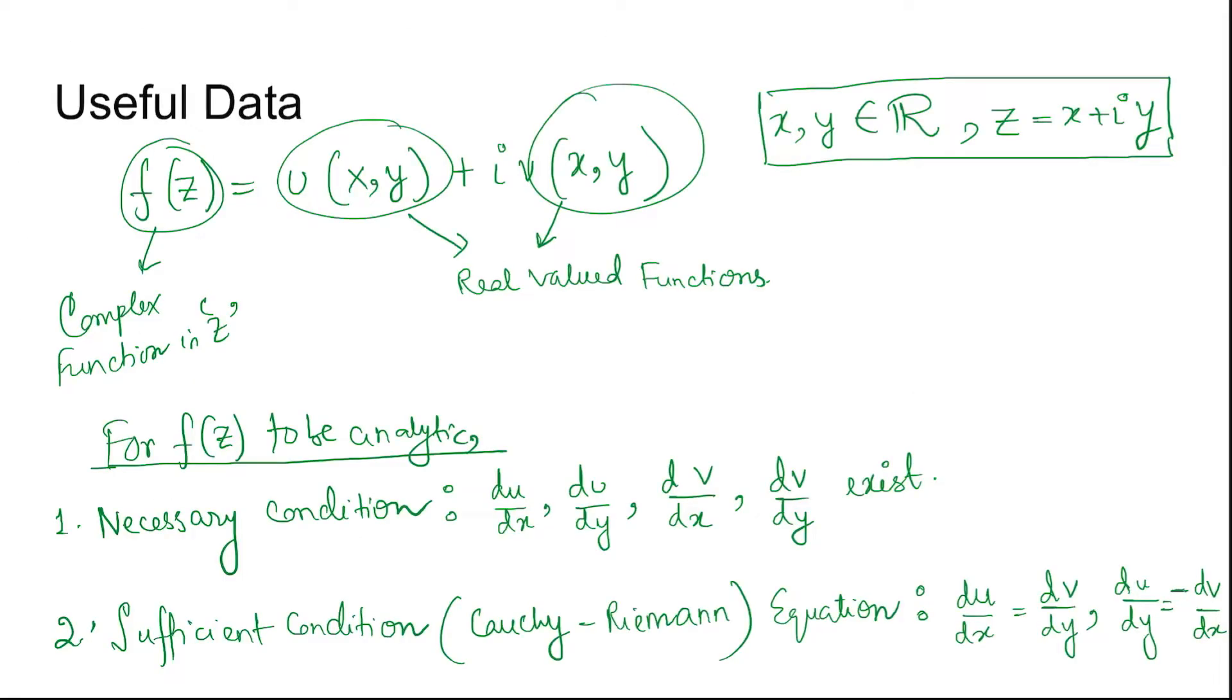Now for useful data: if z is a complex variable with x plus iy, x and y belonging to real, then f(z) which is a complex function, if it is equal to u(x,y) plus iv(x,y), where u and v are real valued functions.